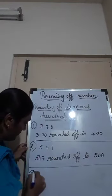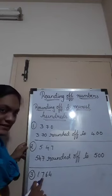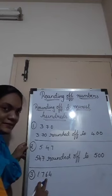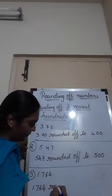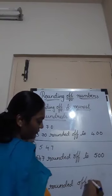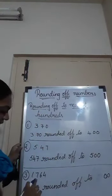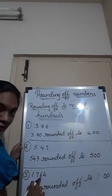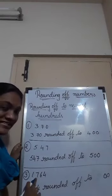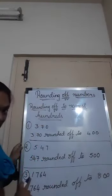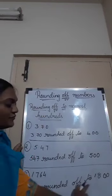One more example: 1764. Here also, the ones and tens places become 0. The hundreds place depends on the tens place value. Tens place is 6, and since 6 means we add 1 to the hundreds place — 7 plus 1 equals 8. The thousands place remains the same, that is 1. So 1764 rounded off to nearest 100 is 1800.